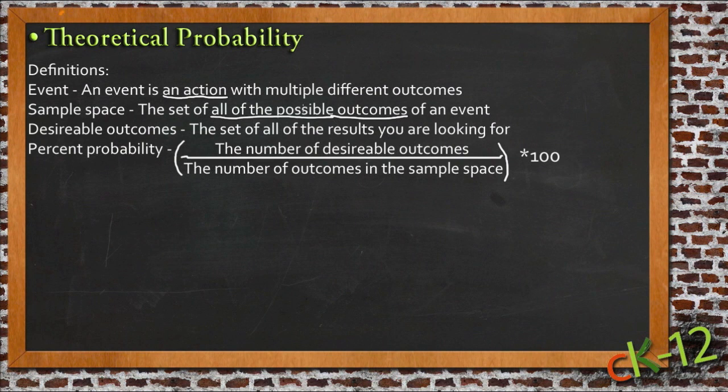It's not the number of outcomes. It's the actual outcomes themselves. Technically, the sample space is that whole set of outcomes. Now you can refer to the number of outcomes in the sample space, and we actually do when we're doing the calculation. But the sample space itself is the actual outcomes that are possible.